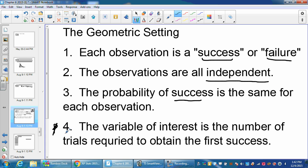The only one that's different is here. In a geometric setting, the variable of interest is the number of trials required to obtain the first success. So the number of rolls before you get a doubles.